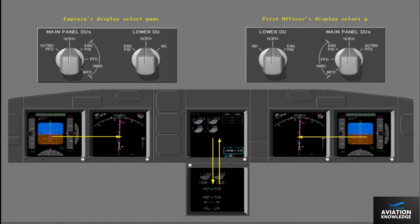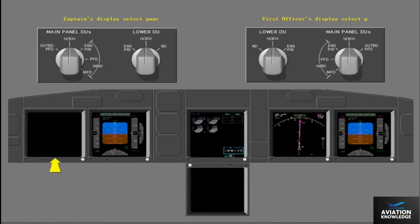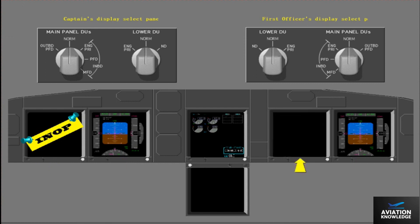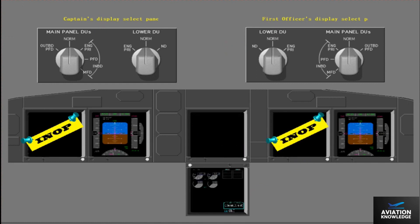If a DU fails, automatic display switching makes sure the necessary data are always available to the pilots. If an outboard DU fails, the DU blanks and the PFD automatically shows on the inboard DU. If an inboard DU fails, the DU blanks. The navigation display or ND does not automatically move to the lower display. If the upper DU fails, the DU blanks and the primary engine display moves to the lower DU. If the secondary engine instruments are being displayed, a compact engine display will be shown.